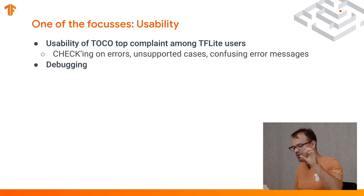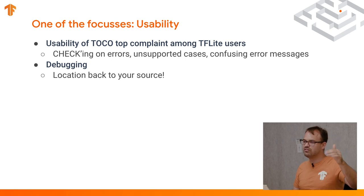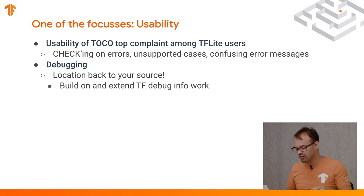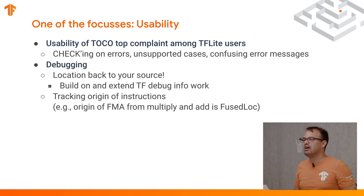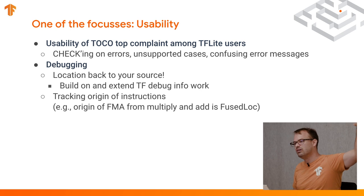One of the ways we want to improve is making the debugging easier — we want the locations to point back to your source. So when an error is emitted, we want to point back to the TensorFlow graph or TensorFlow Python that caused the error. For this, we're building on and extending the TF debug info work currently ongoing. We also want to track the location origin of instructions. For example, if you have a fused multiply add, then it has a fused location corresponding to both the multiply and the add, showing you this new op was created from these previous ops, allowing you to trace back to the original code.